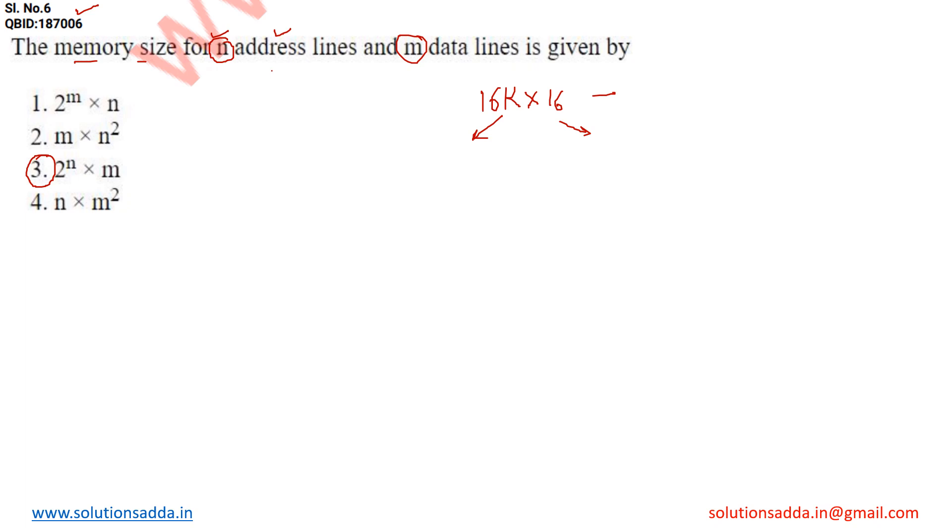Now how we can calculate how much address line will be there and what will be the value of m and n? Address line would always be in order of power of 2. So how we can calculate that?